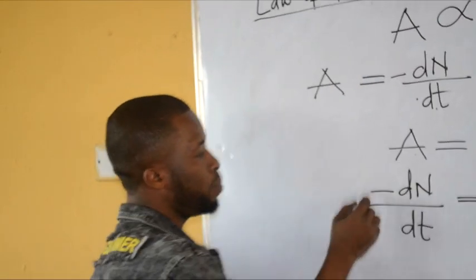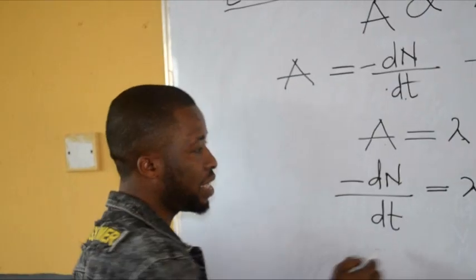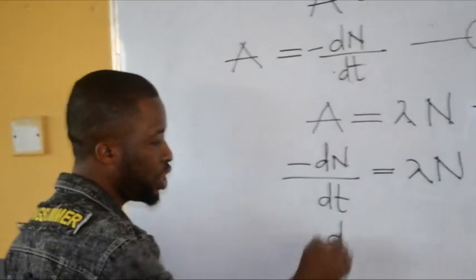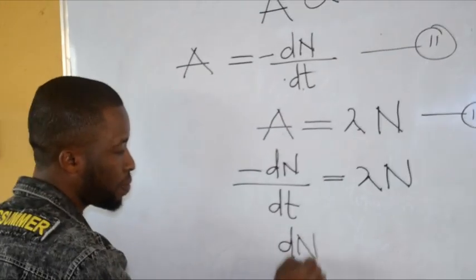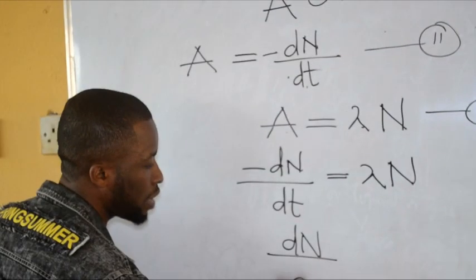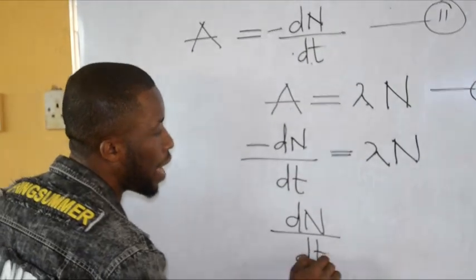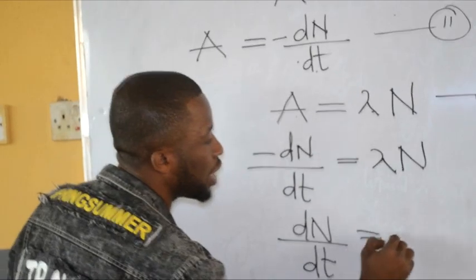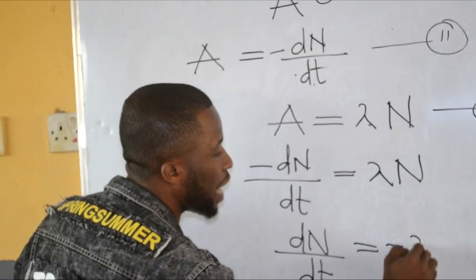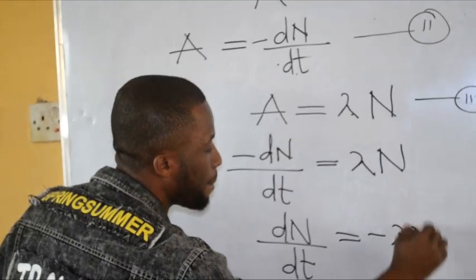I can move the negative sign to the other side — it doesn't change anything mathematically. Then I will have negative d equals lambda N.